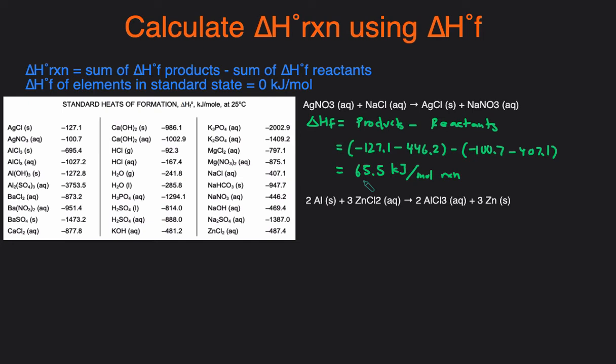Let's take a look at another example where we have to use different concepts. So we're still calculating the delta H of the reaction by using the formation, so we're still going to use products. This is supposed to say delta H of the reaction. So delta H of this reaction equals the sum of the products minus the sum of the reactants.